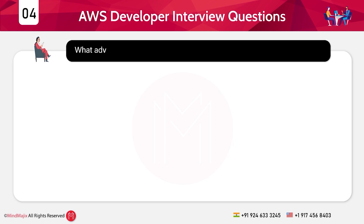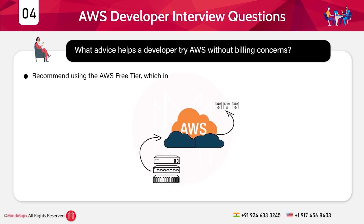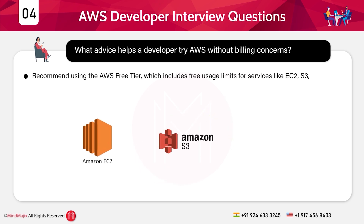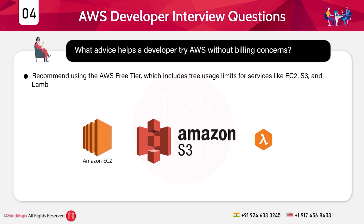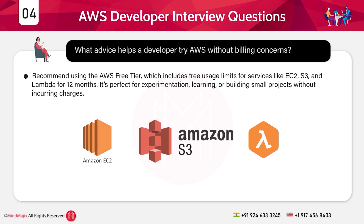Question 4: What advice helps a developer try AWS without billing concerns? Answer: We recommend using the AWS Free Tier, which includes free usage limits for services like EC2, S3, and Lambda for at least 12 months. It's perfect for experimentation, learning, or building small projects without incurring charges.